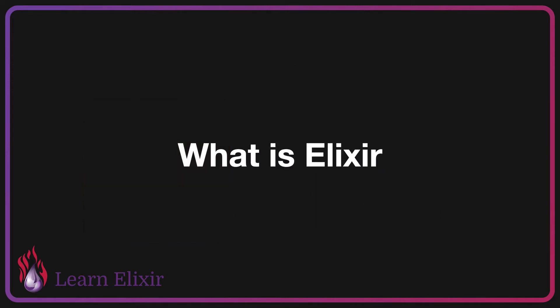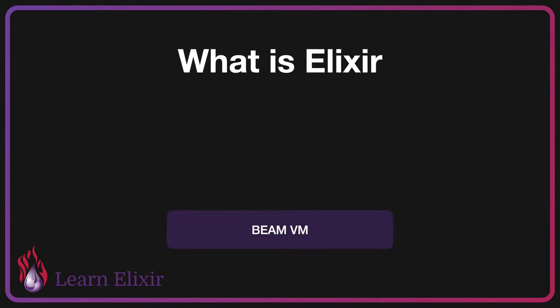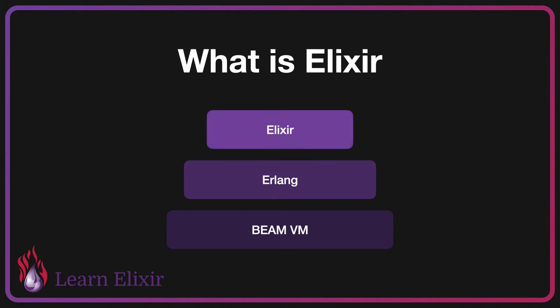For those of you that may be new to Elixir, we'll start out with the basic: what is Elixir? It all starts with the BeamVM, which is run on top of your operating system. Using the BeamVM, you would normally write Erlang applications. Instead, we write Elixir applications, which then compile down into the Beam bytecode using the Erlang abstract format. This gives us all the testing and tools of the Erlang community and allows us to move through projects quite quickly while maintaining a very high level of fault tolerance and scalability.